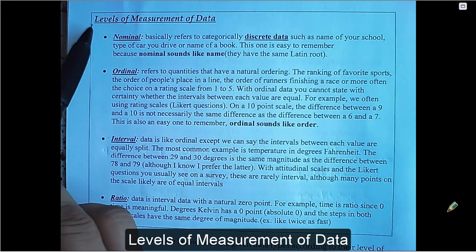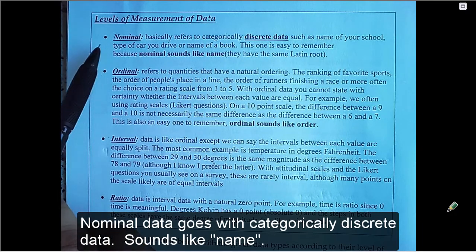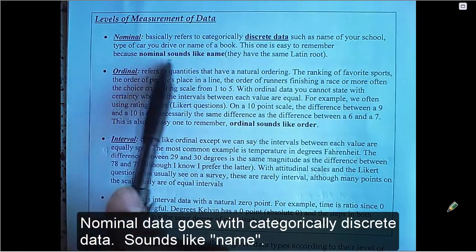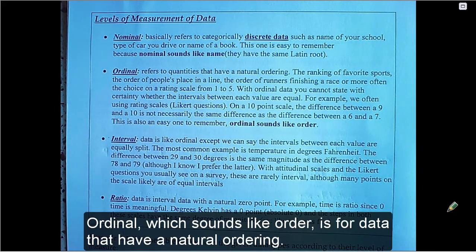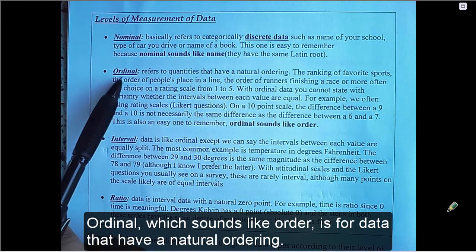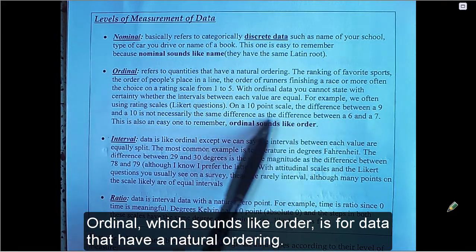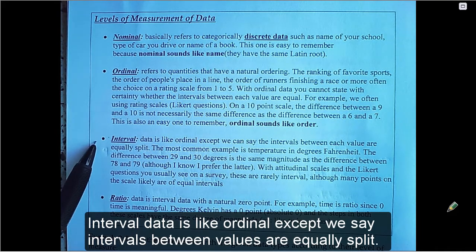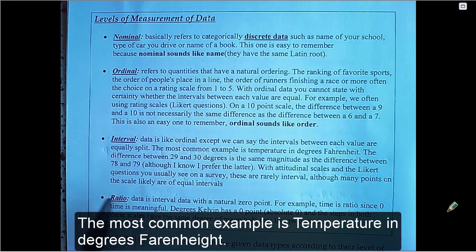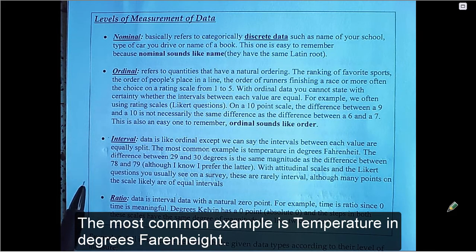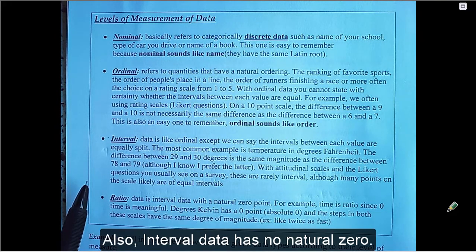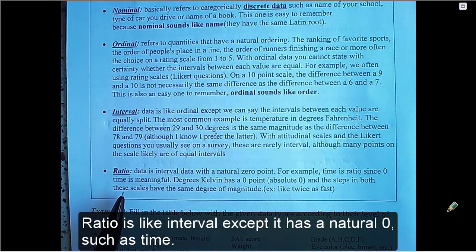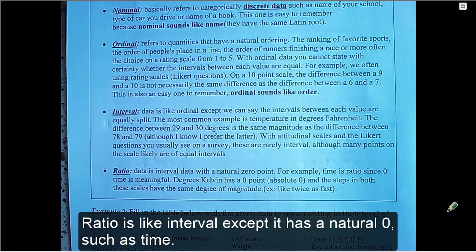Levels of measurement of data. Nominal data goes with categorical, discrete data. Sounds like name. Ordinal, which sounds like order, is for data that have a natural ordering. Interval data is like ordinal, except we say intervals between values are equally split. The most common example is temperature in degrees Fahrenheit. Also, interval data has no natural zero. Ratio is like interval, except it has a natural zero, such as time.